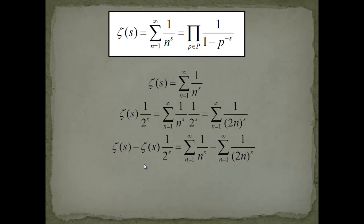We get zeta of s minus zeta of s multiplied with 1 over 2 to the s. This is just this expression. Now on the right hand side we have the sum of all integer reciprocals to the power of s and we subtract from this sum all the even numbers.